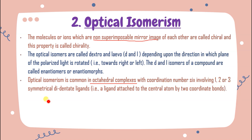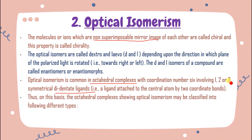If there is one bidentate ligand, the other ligands will be monodentate. If there are two bidentate ligands, two other monodentate ligands are there. If there are three bidentate ligands, no monodentate ligands are present. A bidentate ligand is attached to the central atom by two coordinate bonds — only then is optical isomerism possible.